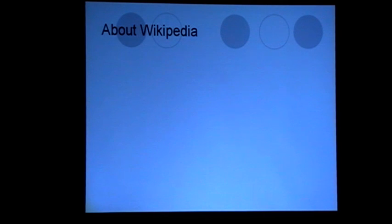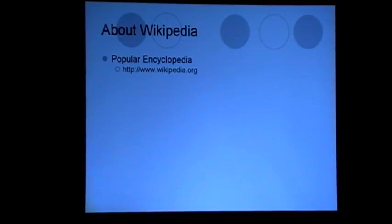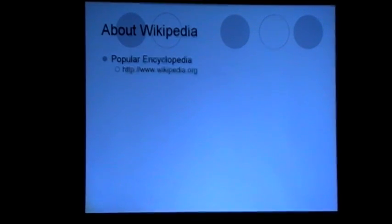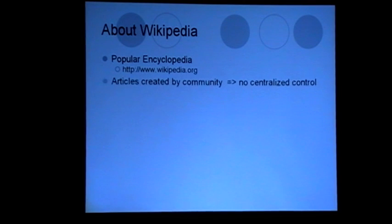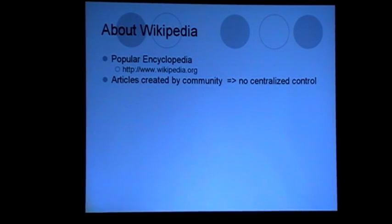What do we know about Wikipedia? Wikipedia is an extremely popular website and a very popular encyclopedia. What is interesting and different about Wikipedia as opposed to most encyclopedias is that it's created by a community — an online community — where any user can contribute to articles. This means there is no centralized point of control, unlike traditional encyclopedias.